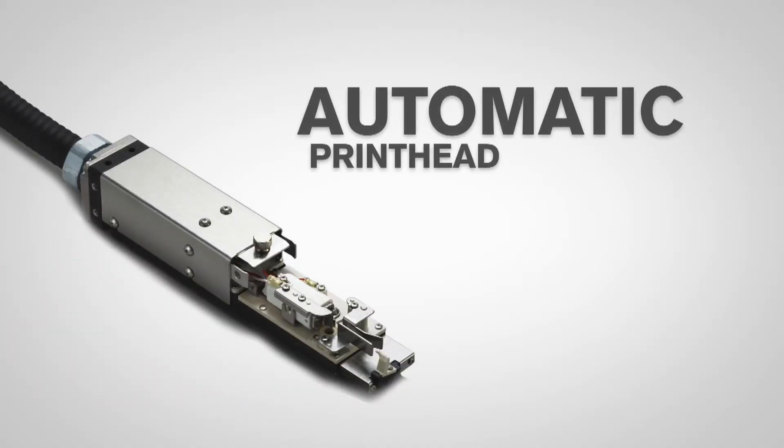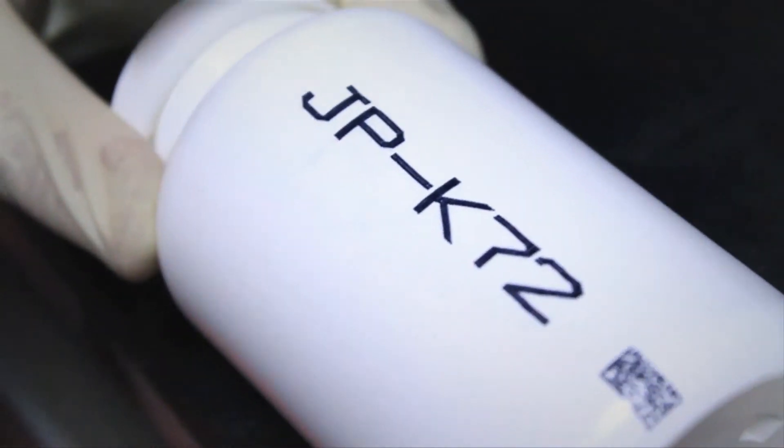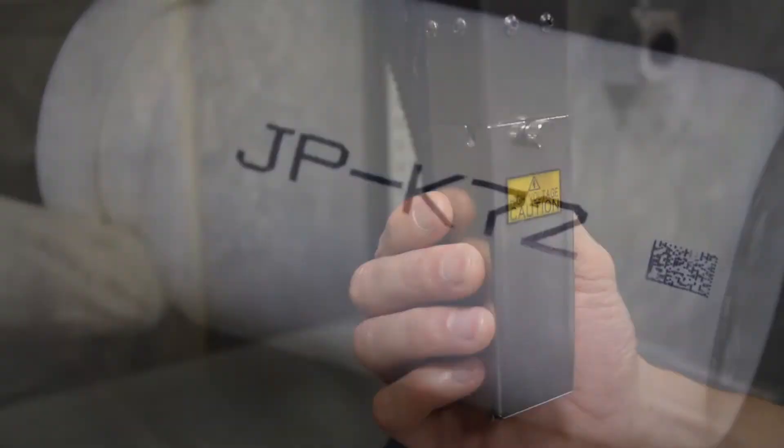Automatic printhead cleaning occurs at shutdown. This enables printers to be fully operational upon startup, saving time and money. The long-lasting stainless steel orifice plate requires fewer replacements, resulting in additional cost savings for our customers.